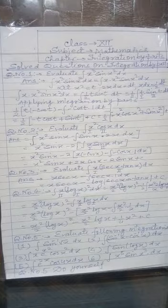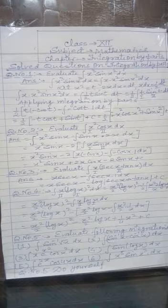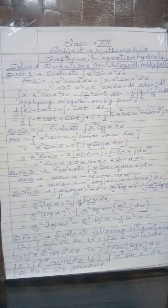Sometimes it can be applied even thrice or more times. Question 3: evaluate ∫x·sec(x)·tan(x)·dx. Although we have three functions, we treat sec(x)·tan(x) as one function because its integration is sec(x). Applying by parts with x as first function and sec(x)·tan(x) as second: x·sec(x) − ∫sec(x)·dx = x·sec(x) − log|sec(x) + tan(x)| + C.